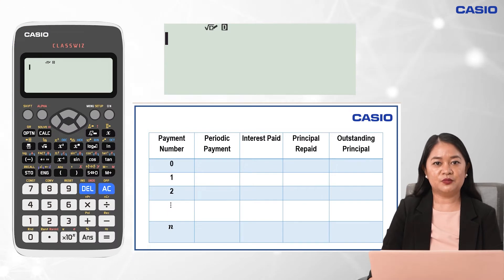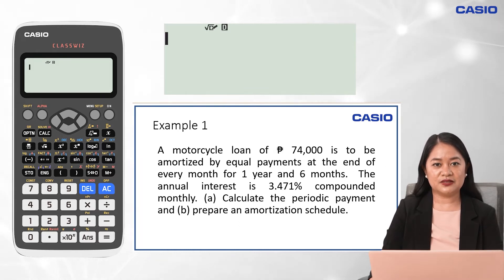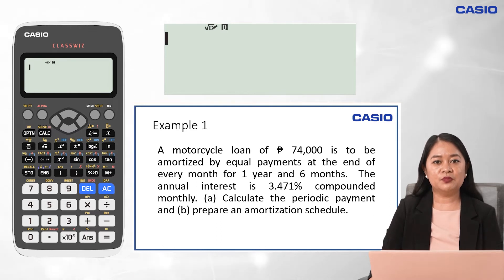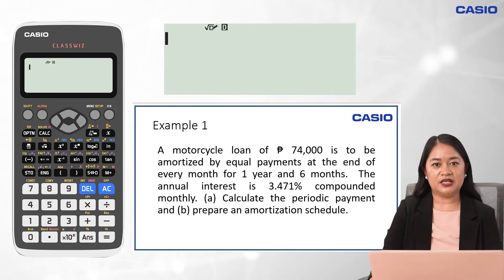Here is a format of an amortization schedule that you can use. For example, in this problem, the given are: present value of 74,000 pesos, period of time for 1.5 years, number of conversion period per year of 12, since the payment is to be made every end of the month — that is 12 times in a year — and interest rate of 3.471%.